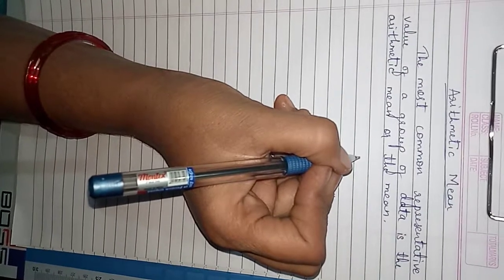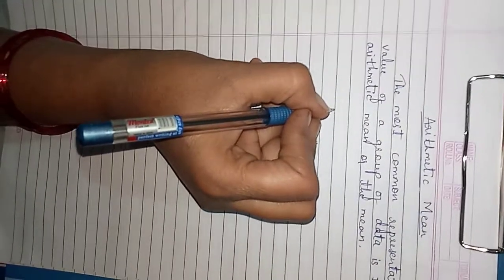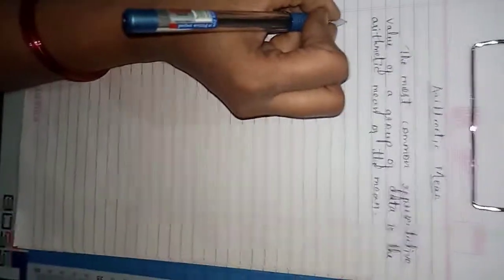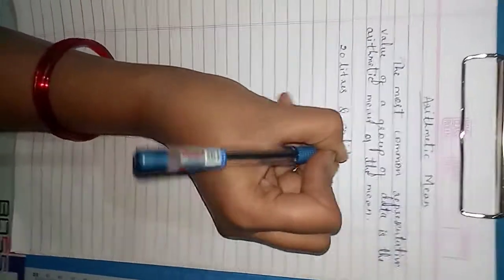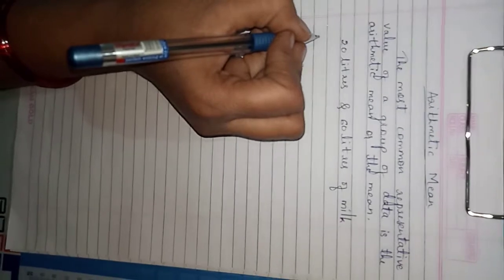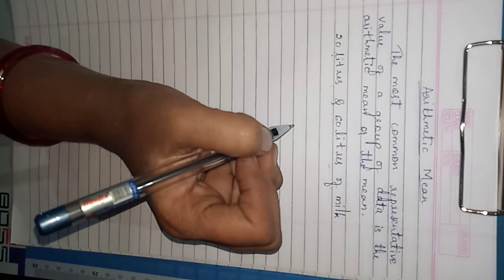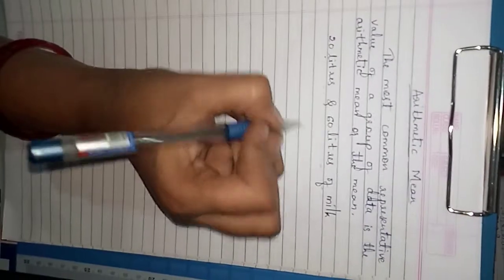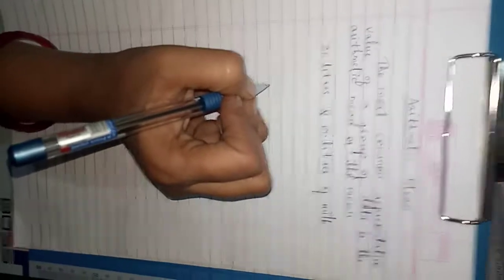To understand the arithmetic mean in a better way, look at the following example. Two vessels contain 20 liters and 60 liters of milk respectively. What is the amount that each vessel would have if both share the milk equally? For this you have to find the arithmetic mean.